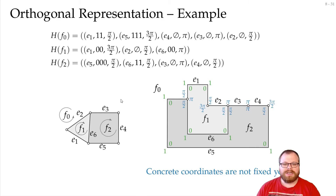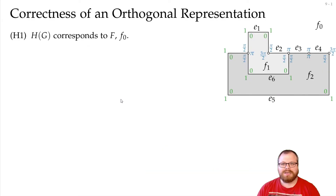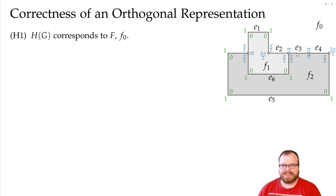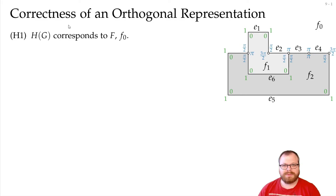We now want to identify the properties that an orthogonal representation must satisfy to be valid. There are four such conditions — one for the overall embedding, one for edges, one for faces, and one for vertices. The first condition simply says that for every face, the order of edges in the representation must exactly match the order given by the planar embedding.